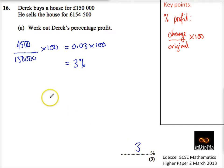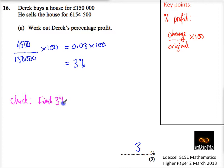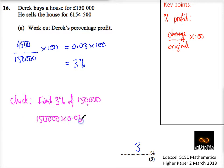Now if you want to check that, what you could do as a little check is find 3% of 150,000. So if you don't believe me or you're not sure and you want to check in the exam, find 3%. To find 3%, it's just going to be 150,000 times 0.03. And you'll actually get 4,500 — so you've checked it's right.